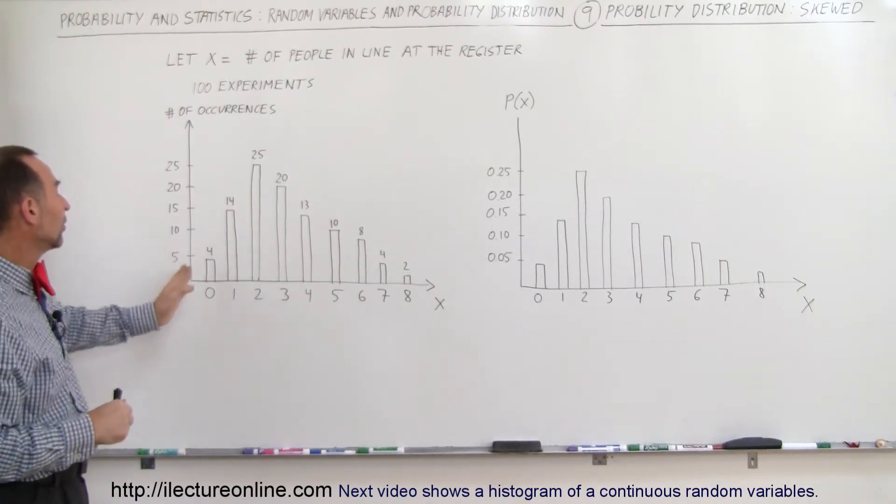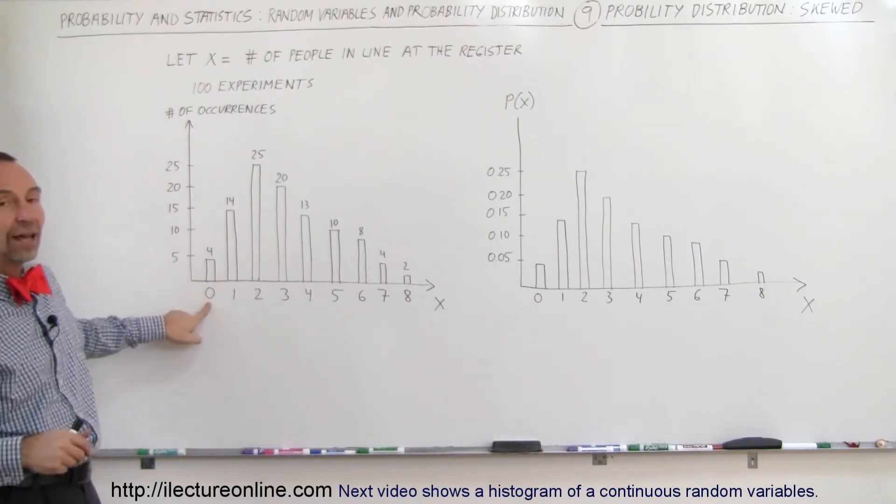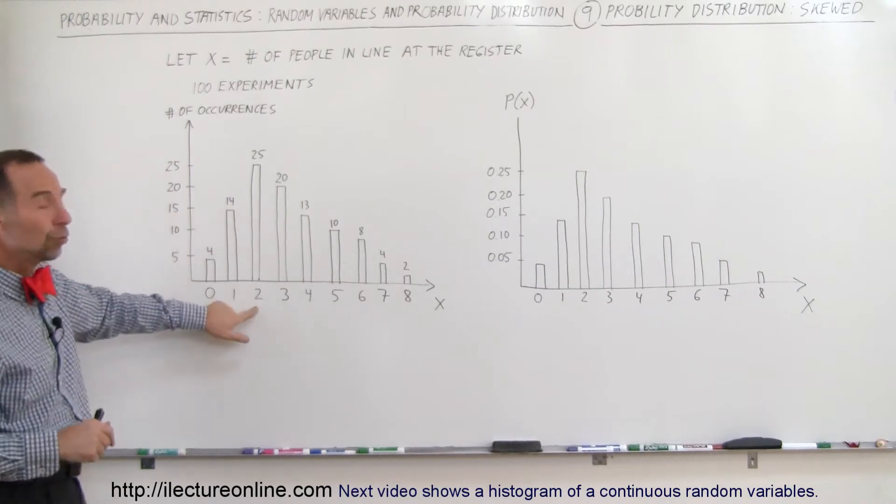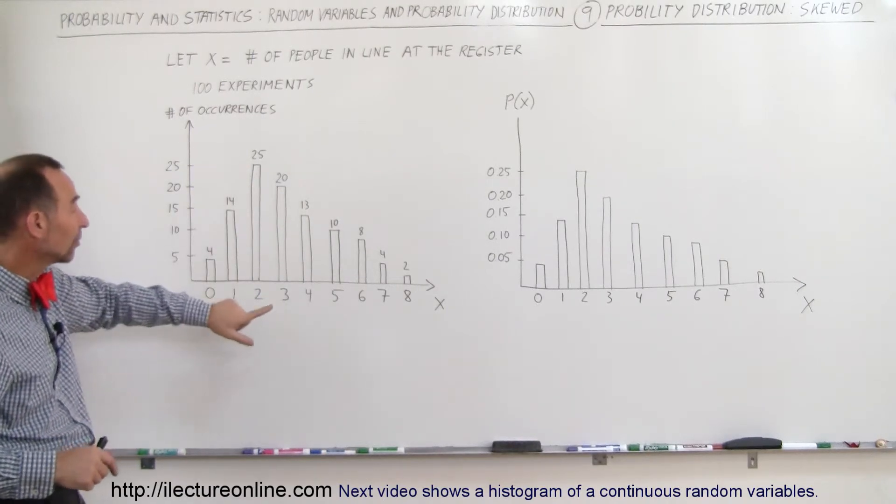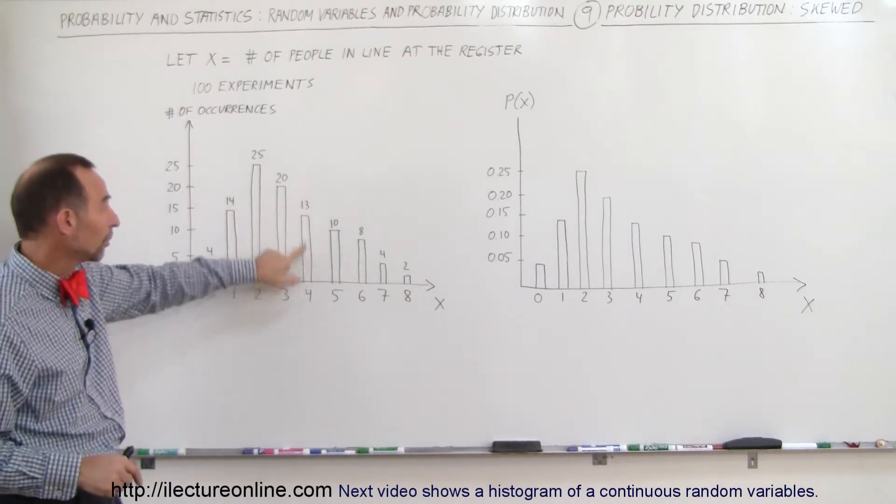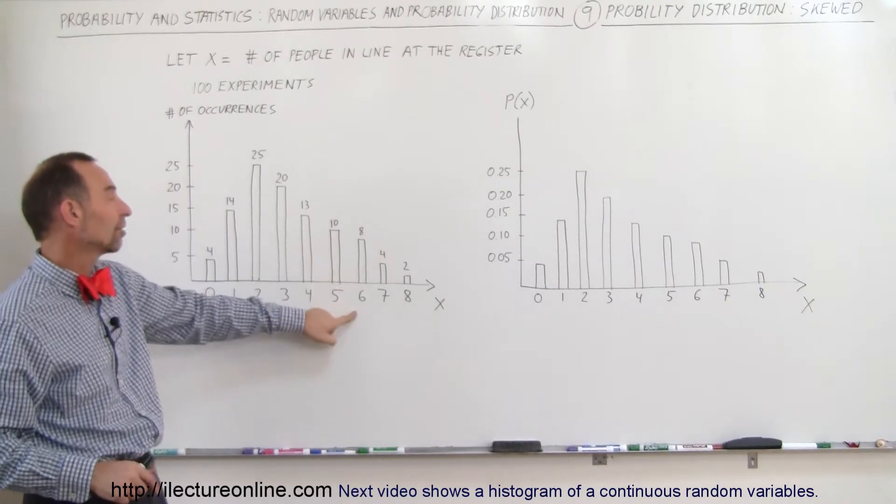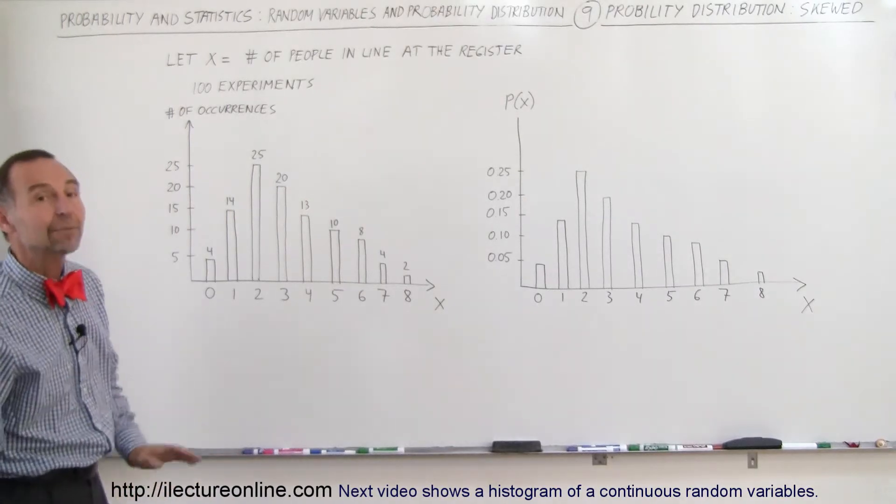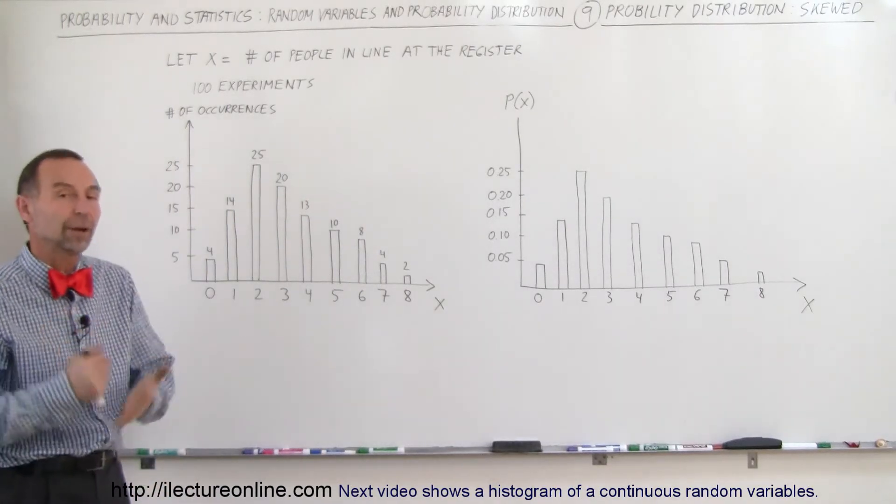He noticed out of 100 times there was nobody standing in line four times, there was one person standing in line 14 times, there were two people standing in line 25 times, three people 20 times, four people 13 times, five people 10 times, six people eight times, seven people four times, and eight people two times, and never were there any more than eight people standing in line. So that was his experiment.